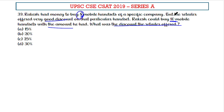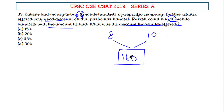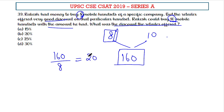Let's consider 8 and 10. Rakesh had an amount — let's take 160 rupees, because it's divisible by both 8 and 10. So initially he was able to buy 8 handsets, which means the price was 20 rupees per piece. Then he is able to buy 10 handsets with the same amount, which means the new price is 16 rupees.